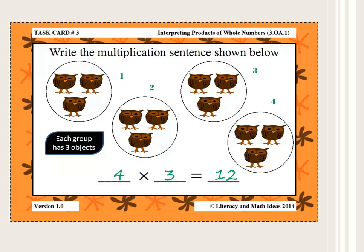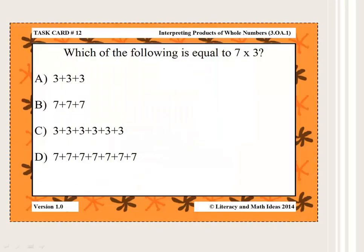Let's take a look at another type of question included in this product based on the 3.OA.1 standard. Here the student is asked to determine which choice represents the multiplication problem shown. This type of problem further reinforces the multiplication concept because it requires the student to distinguish between other choices that may seem intuitive at first but are all incorrect. For this task card, upon examination of all the answer choices, the correct answer is B.